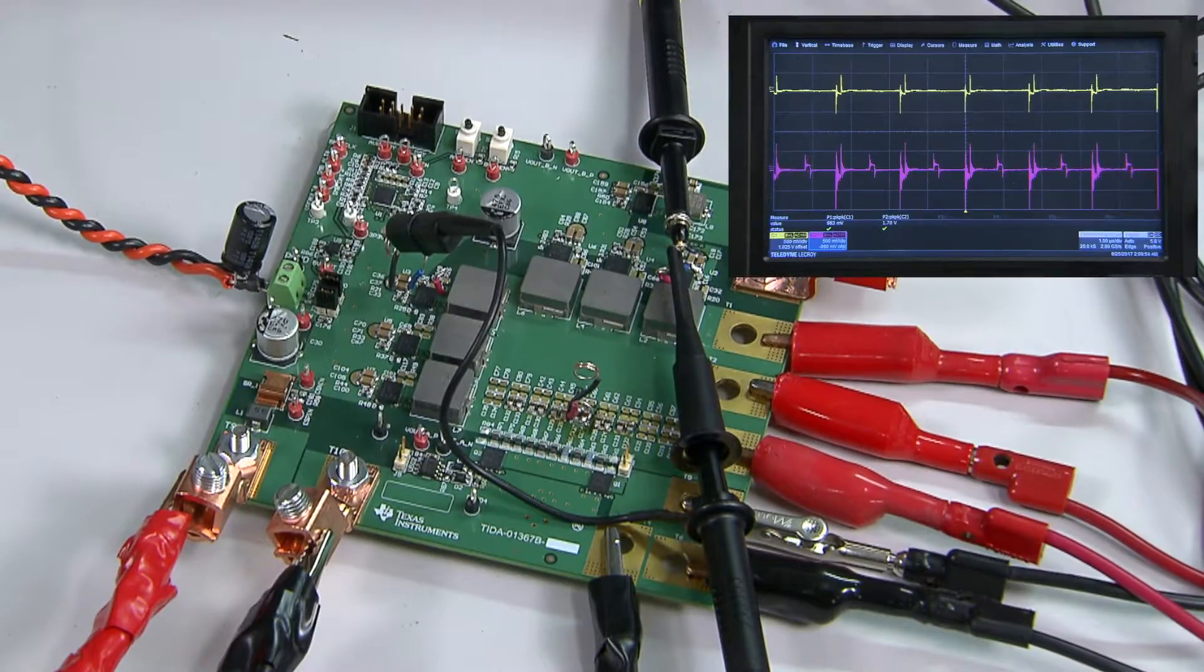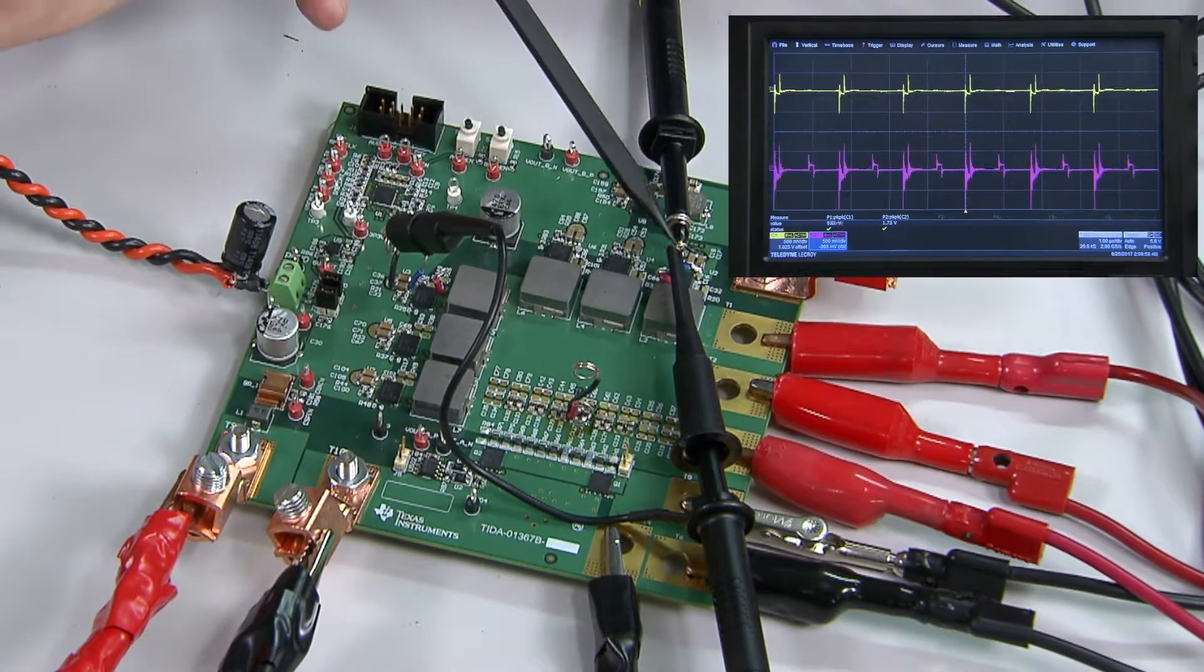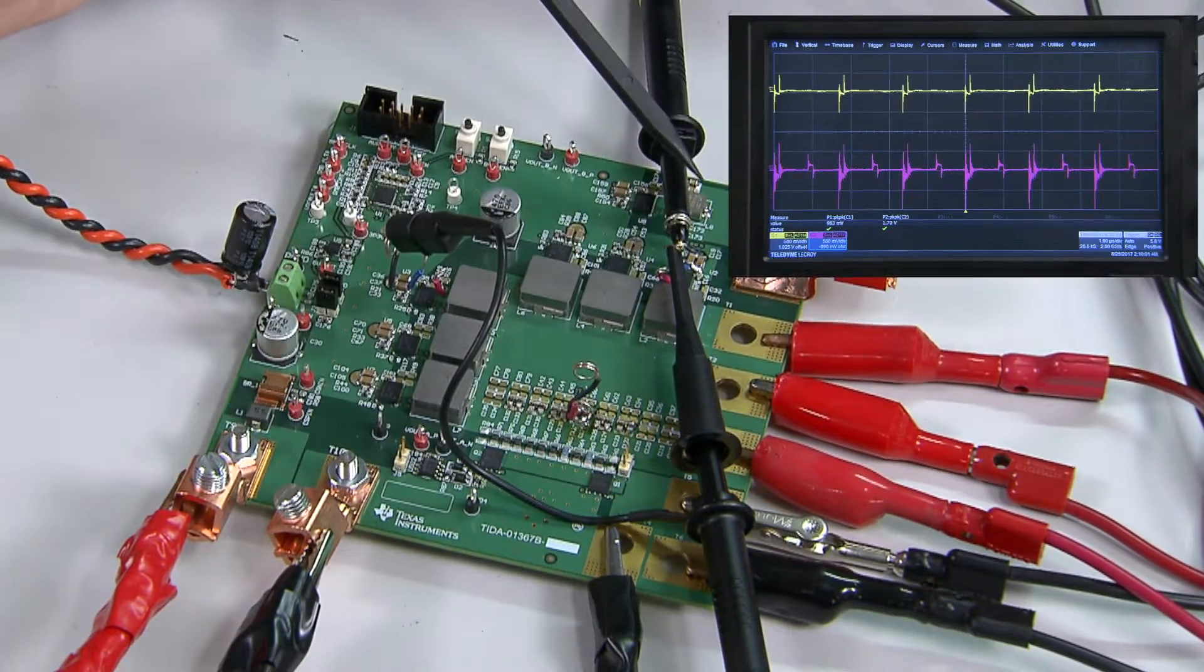When measuring ripple on V-in, the placement of your probe ground is crucial. Looking across the input caps of phase one here, you can see what a difference probe placement makes.